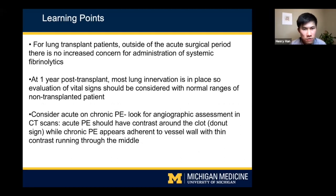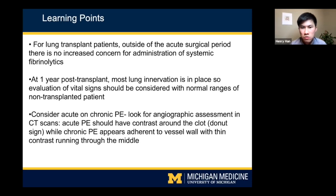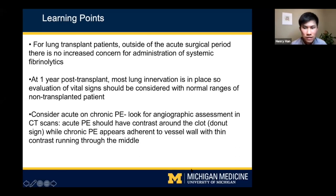A few last learning points: because this was a lung transplant patient, when we spoke with the pulmonary and transplant teams, they said that outside the acute surgical period, there was no increased concern for administration of systemic fibrinolytics. This patient was more than 12 months out from his lung transplantation. At one year post-transplant, most lung innervation was felt to be in place, so evaluation of vital signs should be considered within normal ranges of a non-transplanted patient. Given his 2005 PE history, there was consideration of acute-on-chronic PE.